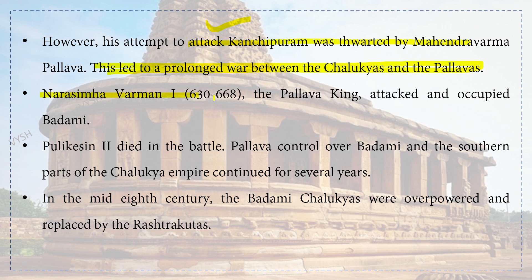Narasimha Varman I, ruling from 630 to 668 CE, attacked and occupied Badami. Pulakeshin II died in the battle. Pallava control over Badami and the southern parts of the Chalukyan Empire continued for several years. In the mid-8th century, the Badami Chalukyas were overpowered and replaced by the Rashtrakutas.